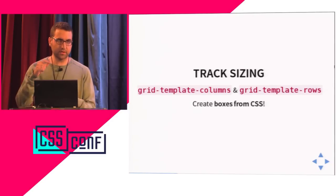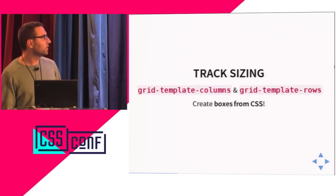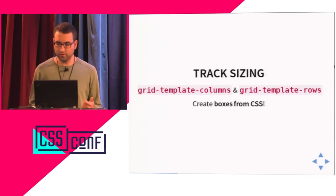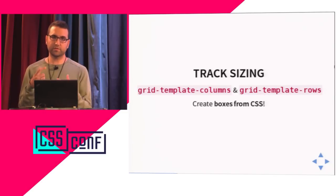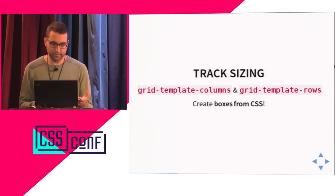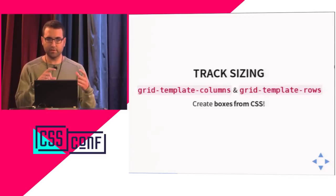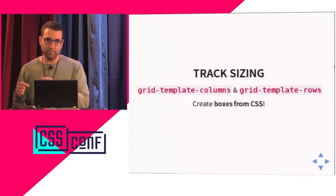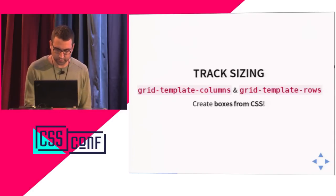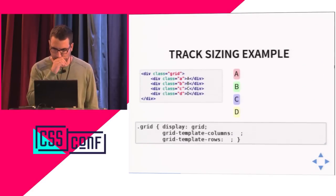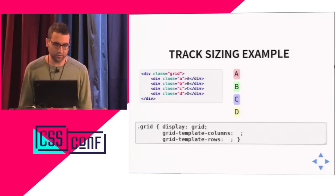We have two main properties to set the structure of the grid — the size of the columns and rows: grid-template-columns and grid-template-rows. They are long names but not so hard to remember. The good part is that we're actually creating boxes from CSS, which was not that common before. Usually you need a wrapper element in HTML. But here, from CSS, we are creating the containing boxes and placing things there.